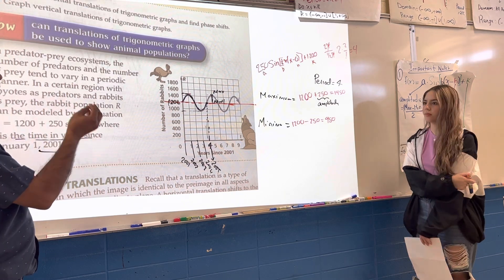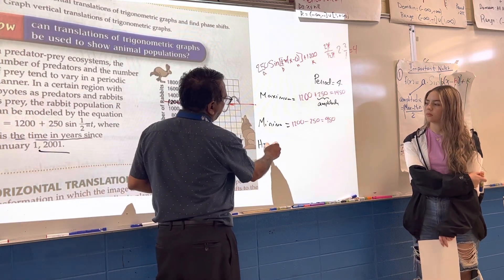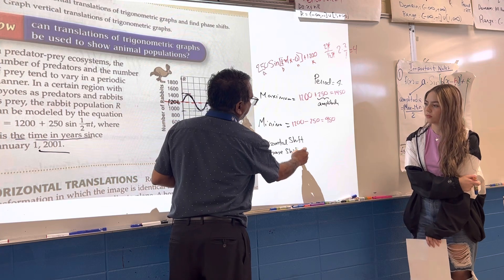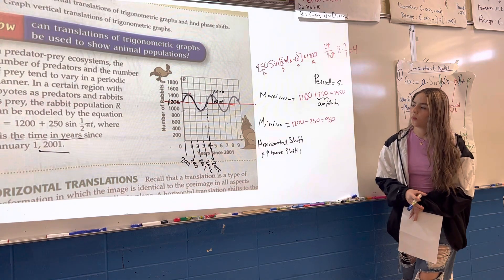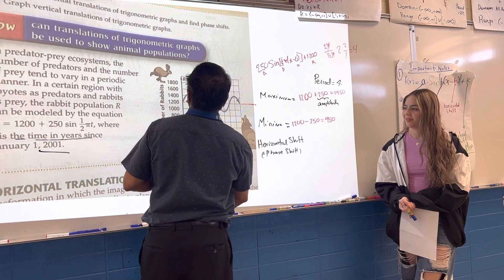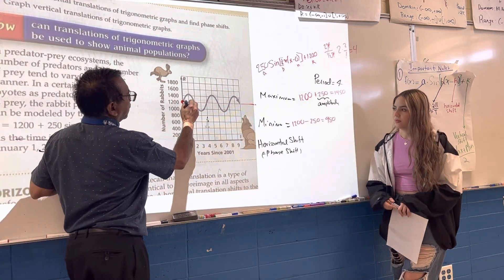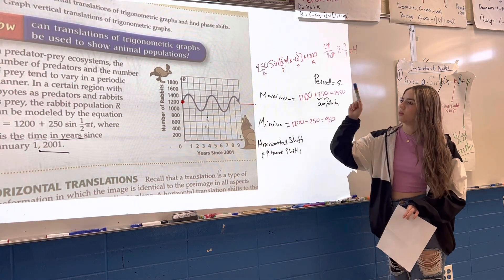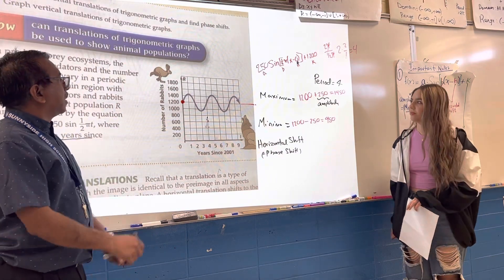Any more questions? She covered the period, maximum, and minimum. The next and final question: what is the horizontal shift — also called phase shift? We know there is no horizontal shift since the equation starts at zero. In the formula, that means H equals zero.